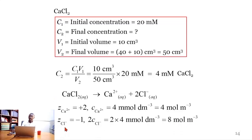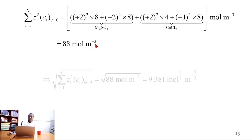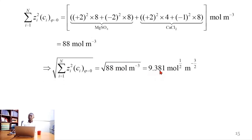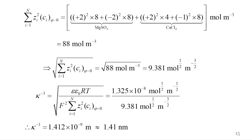For the chloride ion, the charge is −1 and the concentration is two times 4 mM per dm³, equal to 8 mole per m³. Putting all of those together gives a result evaluating to 88 mole per m³, and the square root gives 9.381 mol^(1/2)·m^(−3/2). Combining these gives a result evaluating to 1.412×10⁻⁹ m, which is approximately 1.41 nanometer.